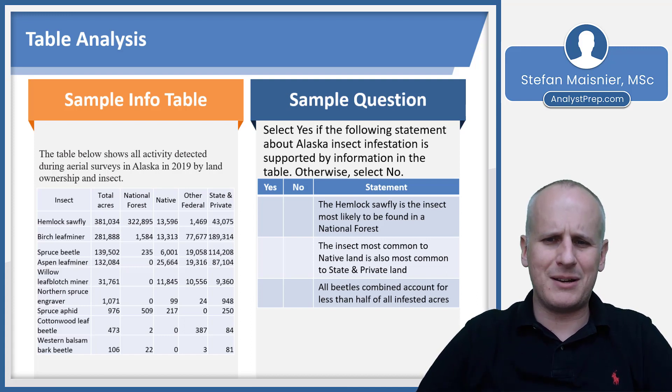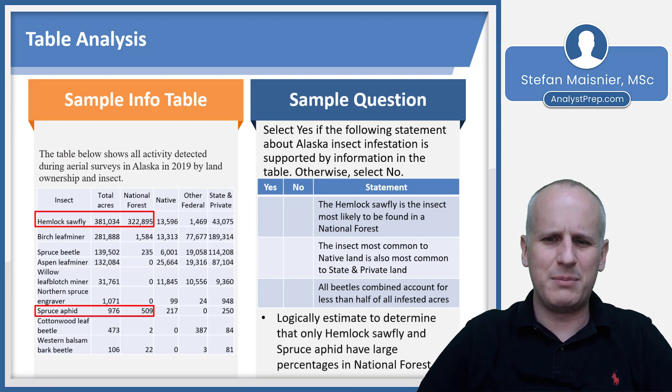We start with the first statement about the hemlock sawfly being the insect most likely to be found in the national forest. We can logically estimate to determine that only the hemlock sawfly and spruce aphid have large percentages in the national forest. Because we can see we've got national forest out of total acres for the infestation.